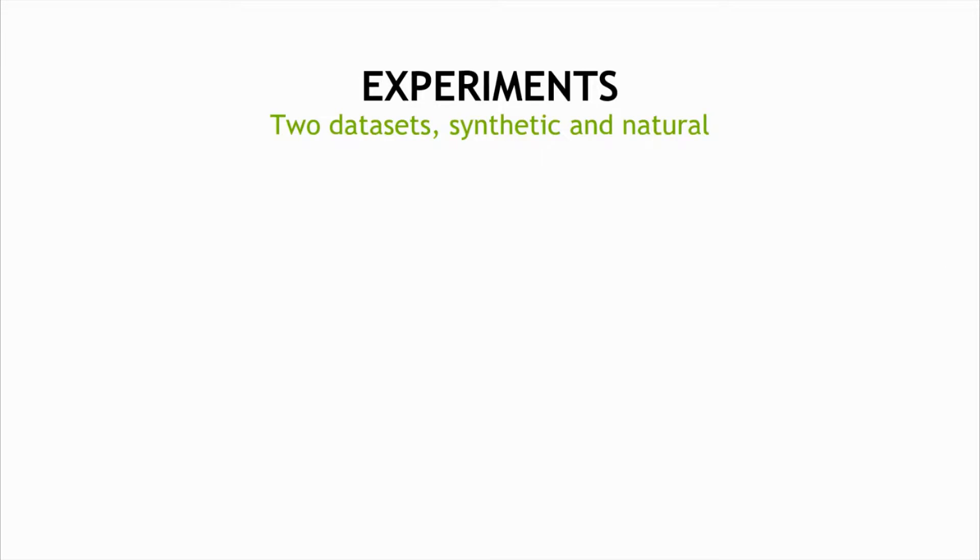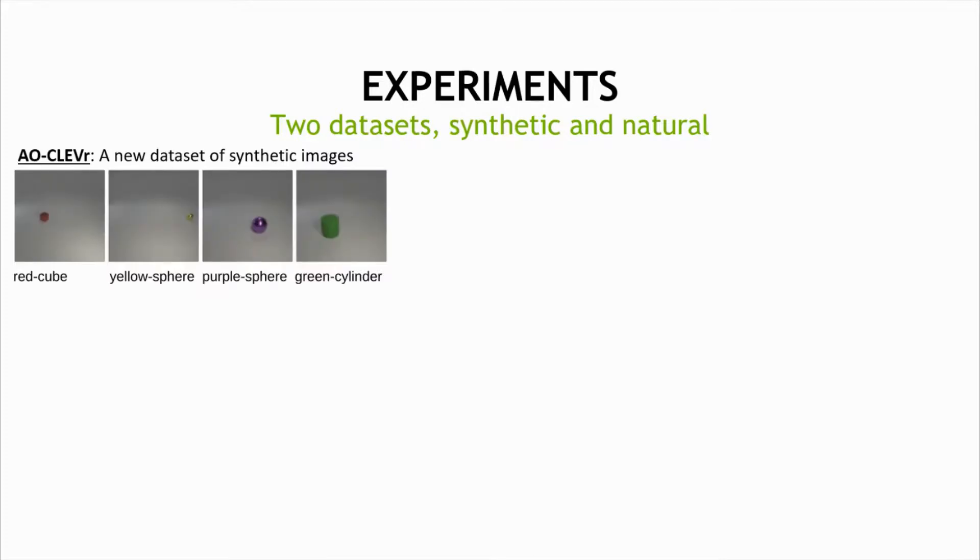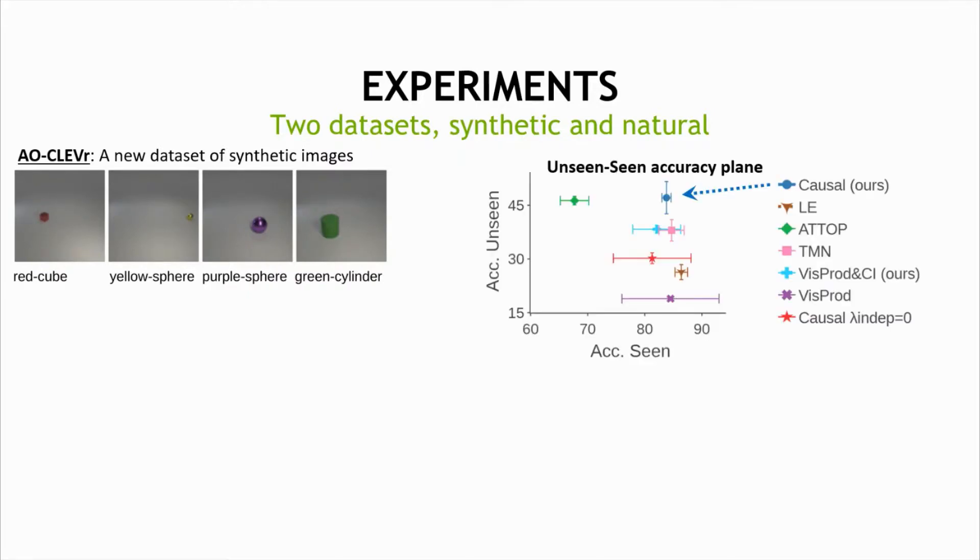We experimented with two datasets. One is synthetic and well-controlled, and the other is more natural. The first one is a new dataset that we generated based on CLEVR type of data, but it is simpler. There is only a single object in every image, and we had three types of objects and eight types of colors.